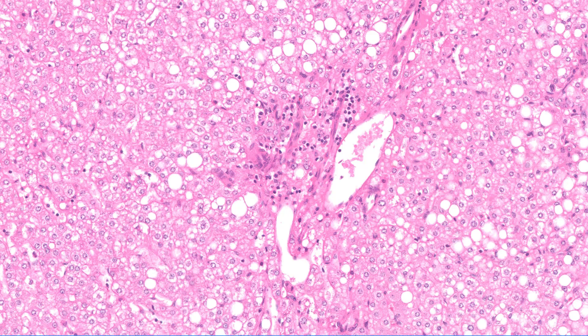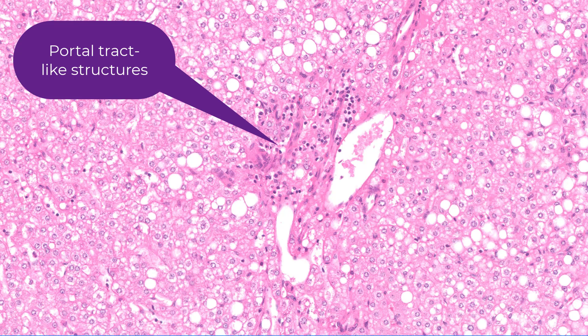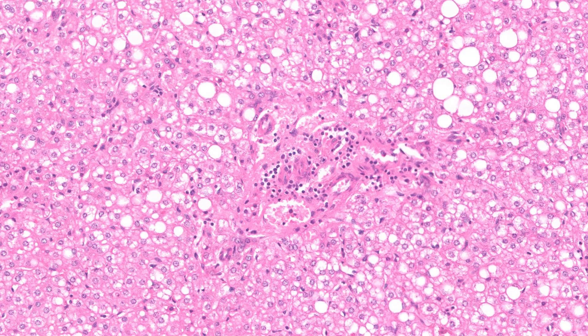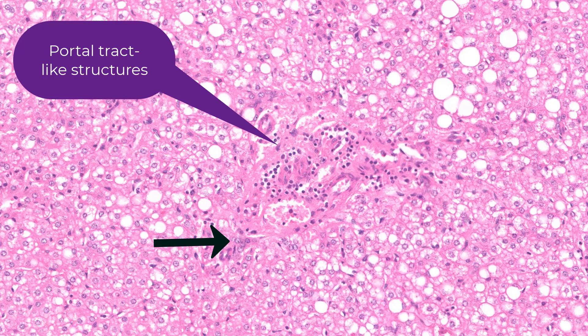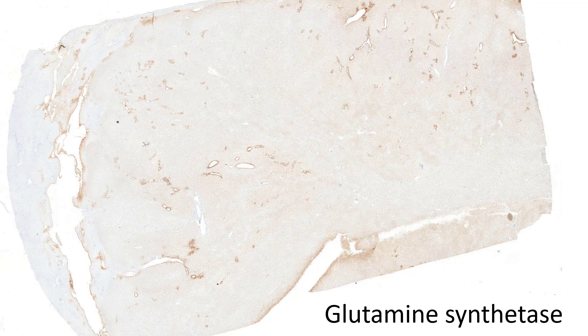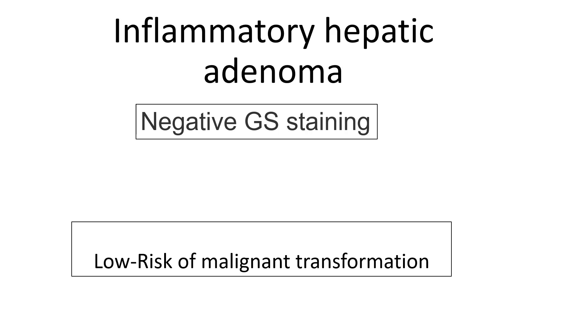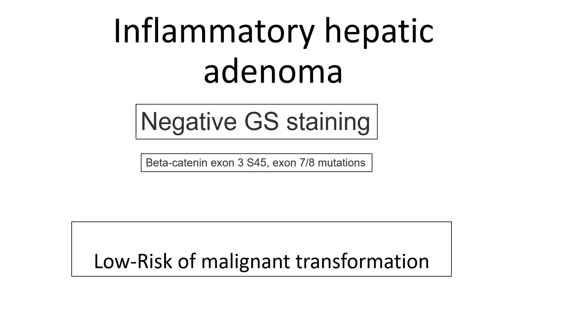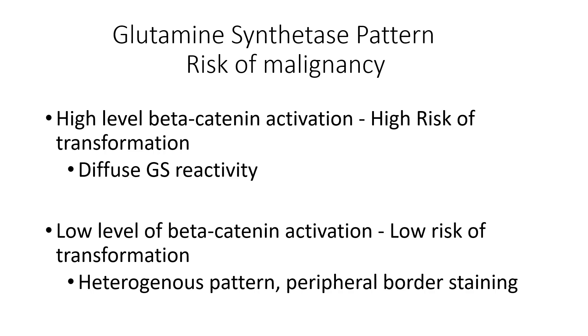One final case: a 45-year-old female with portal tract-like structures. There are certainly inflammatory cells and naked arterioles. Here's another portal tract-like structure, and perhaps a bile ductule right here. The SAA stain works really nicely here — notice this diffuse, strong reactivity for SAA. This is an inflammatory type hepatic adenoma. The glutamine synthetase stain was essentially negative, which implies that this would have a very low risk of transforming to HCC. A negative GS stain implies a very low risk of transforming to HCC, and that typically corresponds to these kinds of beta-catenin mutations.